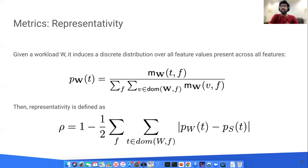The second metric that we define is the notion of representativity. Given a workload w, it induces a discrete distribution over the feature values present in w across all features. These distributions can be interpreted probabilistically which allows us to define the distance between distributions. So given a summary workload s and the input workload w, we define the representativity as the total variation distance between the distribution induced by the input workload and the summary workload. Representativity is also a value between 0 and 1 and ideally we want it to be as high as possible.